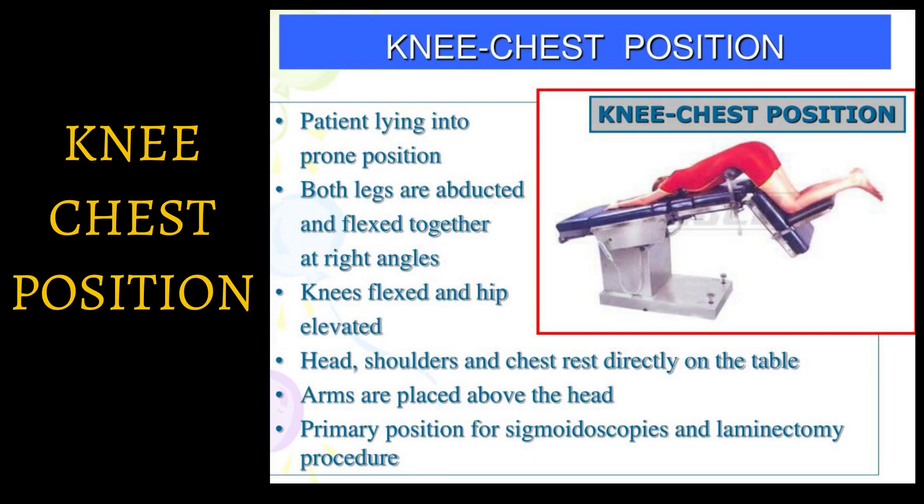Next is knee-chest position. You can see the image — the patient lies in prone position, both legs are abducted and flexed together at a right angle, the knees are flexed and hips elevated, and the head, shoulders, and chest rest directly on the table with arms placed above the head. This is the primary position for sigmoidoscopy and laminectomy procedures.